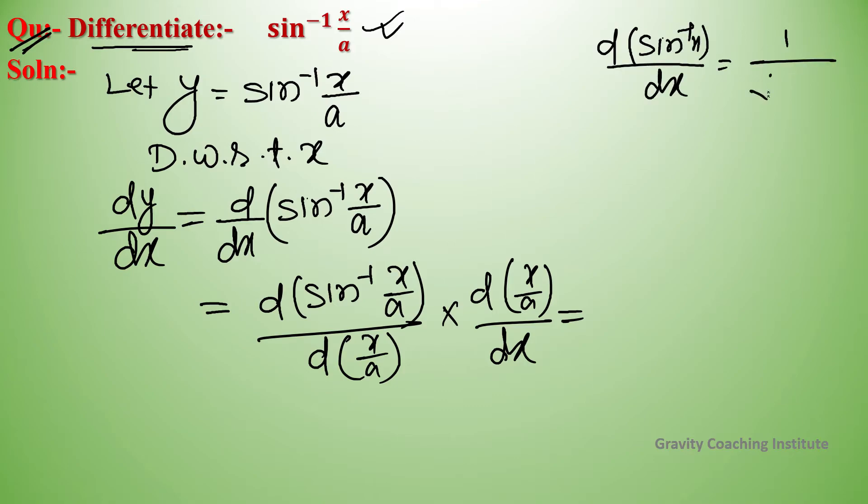one upon under root one minus x squared. So this will be one upon under root one minus (x/a) whole squared, multiply by the differentiation of x/a, which is one upon a.